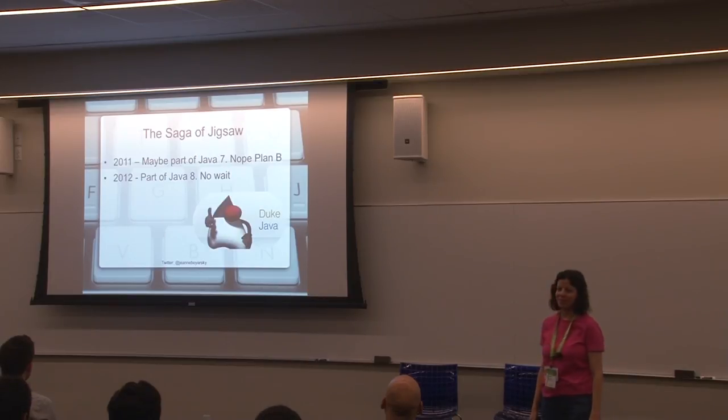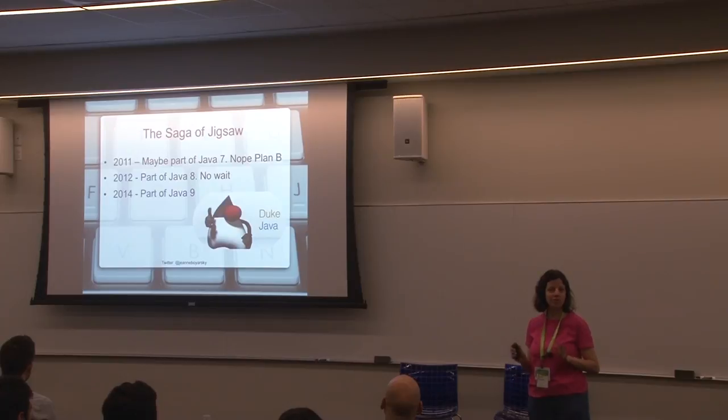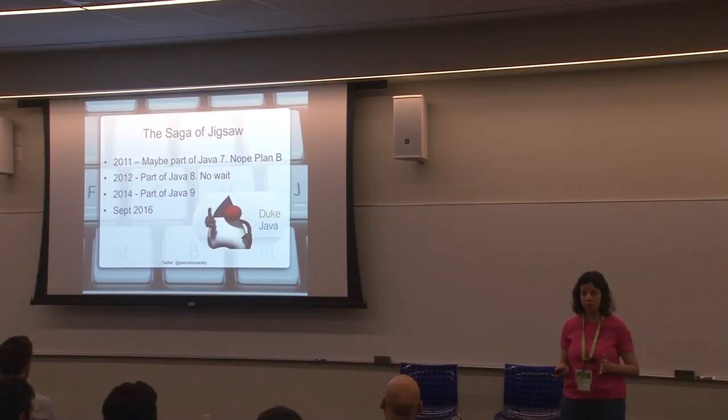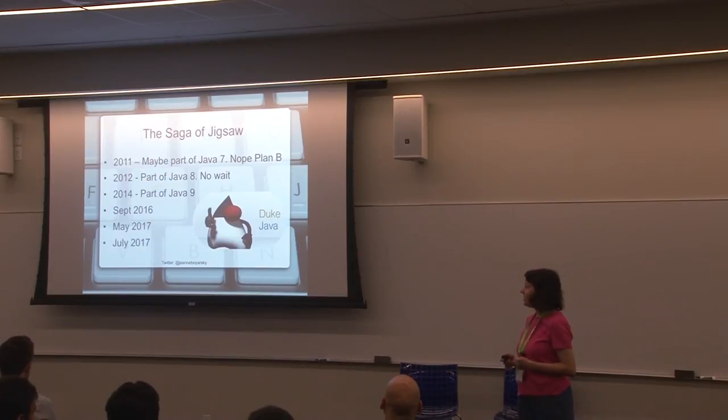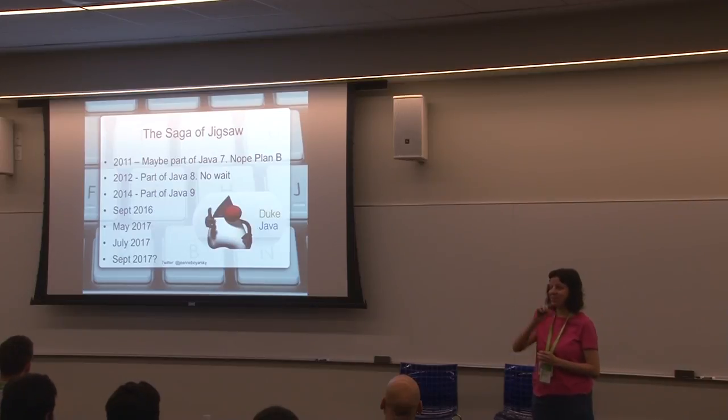In 2012, they decided it wasn't going to be part of Java 8 either, but it was going to be part of Java 9. And the best part is, it's so embedded in the Java 9 implementation that this time it has to happen. In 2014, committed, it's going to be part of Java 9. We're now in 2017. The first release date that anyone believed was possible for Java 9 was September 2016. Then May 2017. Then July 2017. And now we're up to September 2017, with a question mark, because it's changed so many times. Who knows?